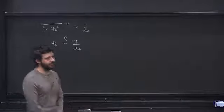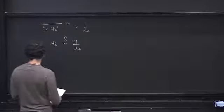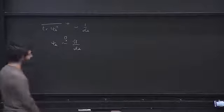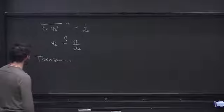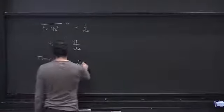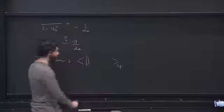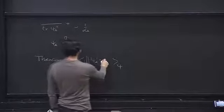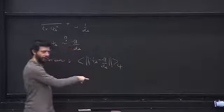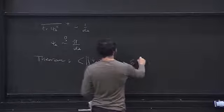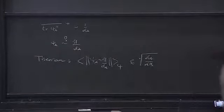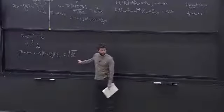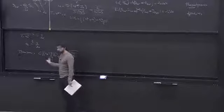Theorem (proof skipped as it contains time-consuming technical details): the average of the trace-norm distance between Ψ_A and (1/D_A)·I_A is bounded above by sqrt(D_A/D_B). In the thermodynamic situation where D_A << D_B, this distance is very small.